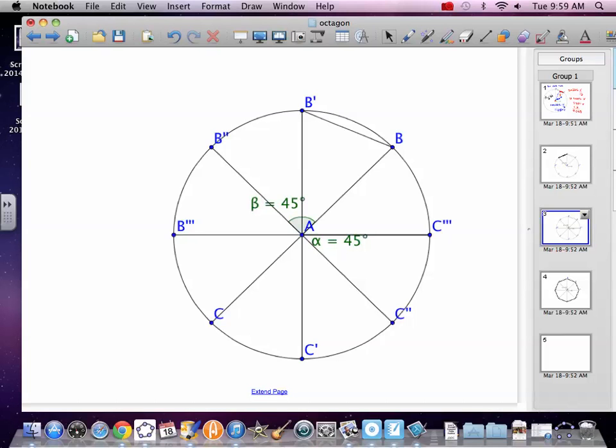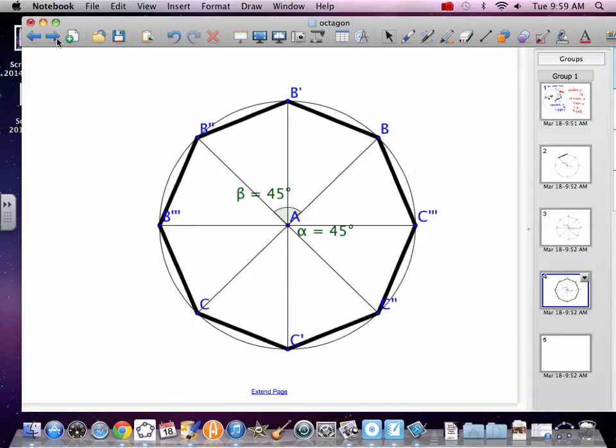All the way around the circle. If we do 45, we can do that 8 times. We end up building a regular octagon. So, if you want to build a regular octagon, you break 360 divided by 8, you break it up into 45 degree sectors.